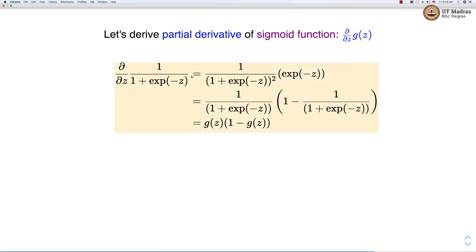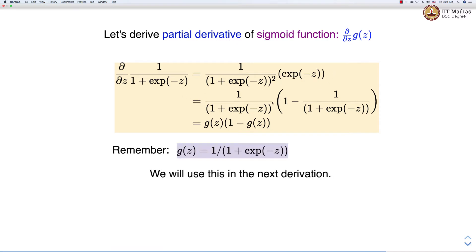The partial derivative of the sigmoid function is equal to 1 divided by (1 plus e to the minus z), squared, times e to the minus z. We can rewrite e to the minus z as 1 minus 1 divided by (1 plus e to the minus z). After simple algebraic manipulation, this comes out to g(z) times (1 minus g(z)). We will use this identity — that the partial derivative of the sigmoid function equals g(z)(1 minus g(z)) — for calculating the partial derivative of the loss with respect to the weight vector.